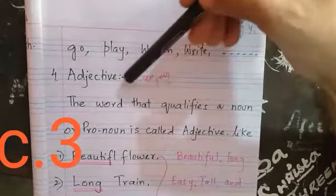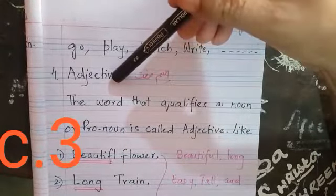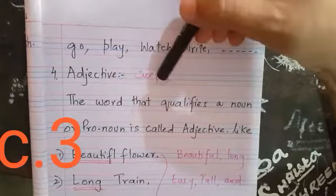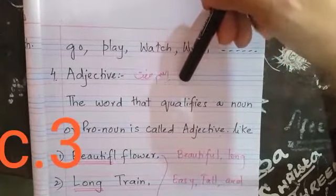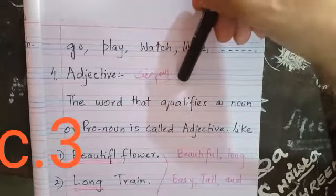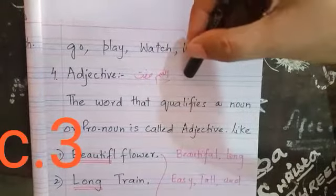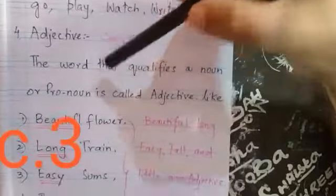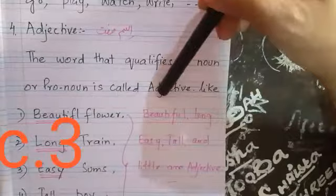Now come, adjective. You have already been told before, in class 2 you studied adjective. Whatever qualifies your noun and pronoun, their goodness, badness, quality, their quantity like more, some, more, many, numbers. The word that qualifies a noun or pronoun is called adjective.